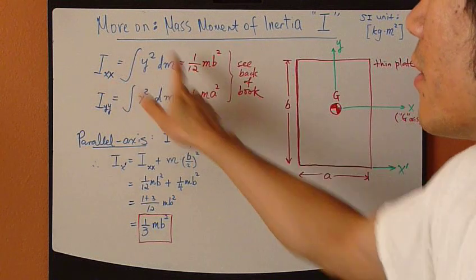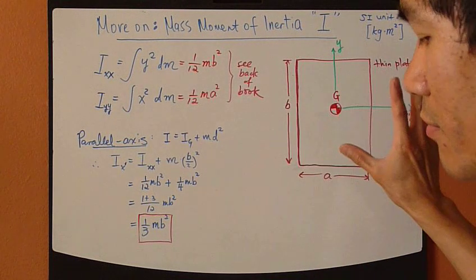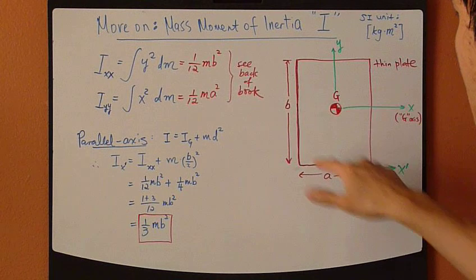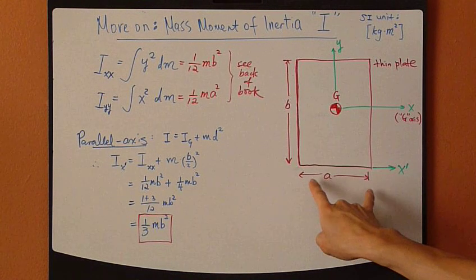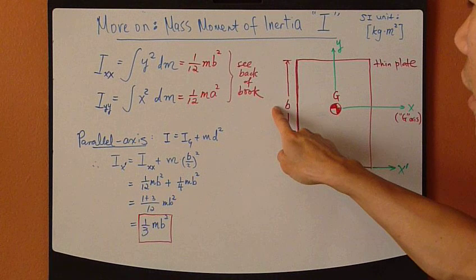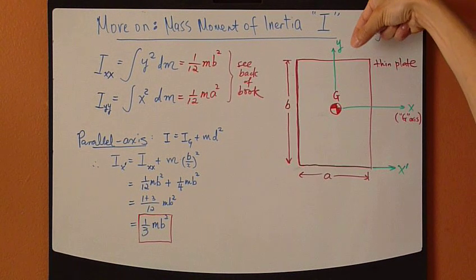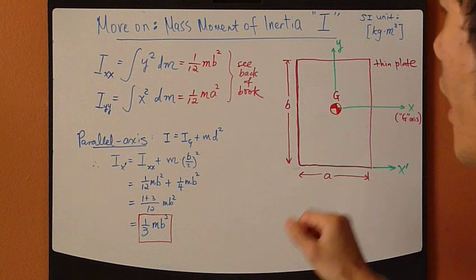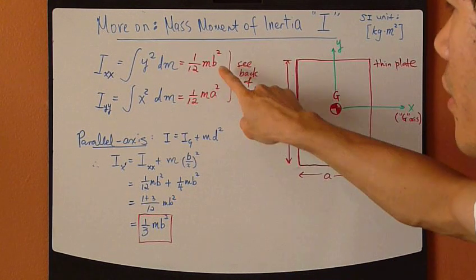Now applying this definition to any common shape, for example, this thin plate right here, having a width of a and a height of b, and a thin little thickness. And going through some calculations, this is the result.